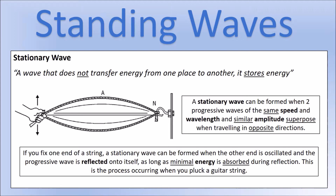Stationary waves are only formed under certain specific conditions — all of which must be met. You need two progressive waves traveling at the same speed, with the same wavelength and similar amplitude, superpositioning while traveling in opposite directions. The easiest way to achieve this is to fix one end of a string and oscillate the other, so the wave reflects back on itself. This is essentially what happens when you pluck a guitar string.